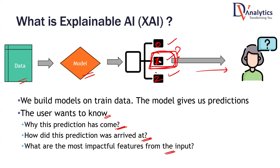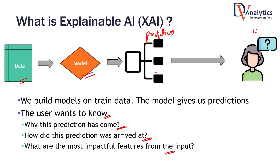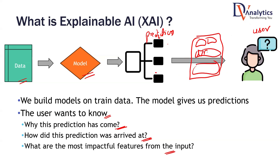So what Explainable AI does is it will try to give you another interface in between. You have the data, you have the model, this is the prediction, and you want to answer the user. Before getting to the user, you want to set up one Explainable AI interface where you are trying to show some graphs and visualizations, trying to help the user that these are the factors that are influencing your case. In this particular case, these are the factors that are influencing — that is the reason why you got this predicted value.